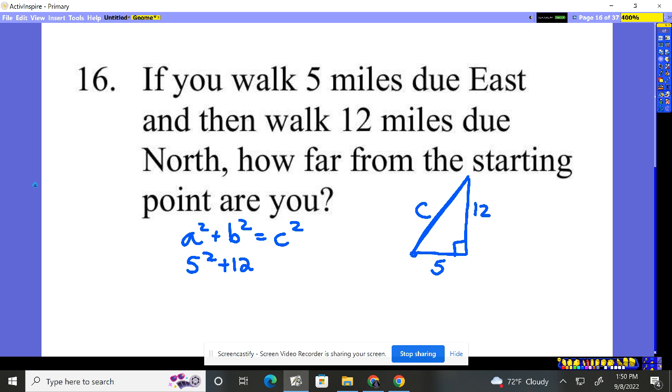So 5 squared plus 12 squared will equal our hypotenuse value squared, or the length we're searching for from how far we are from our beginning spot. 25 plus 144 equals c squared. Add them together, you have 169 equals c squared.